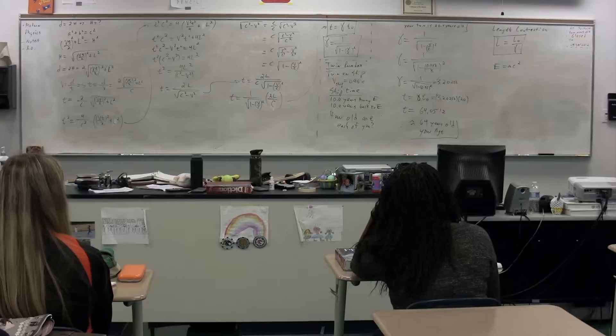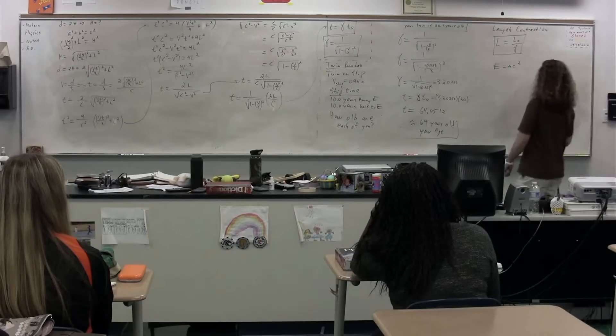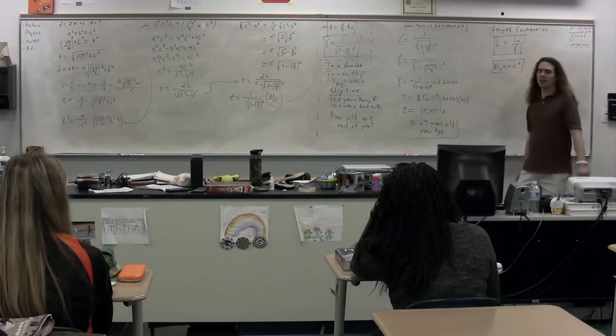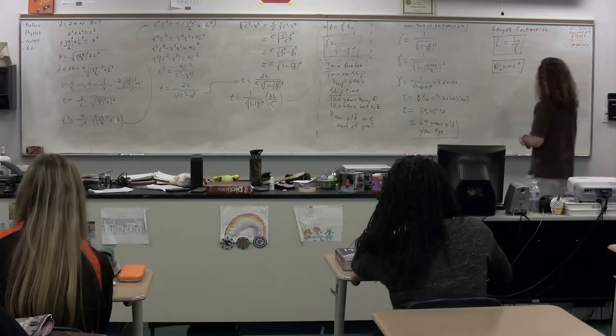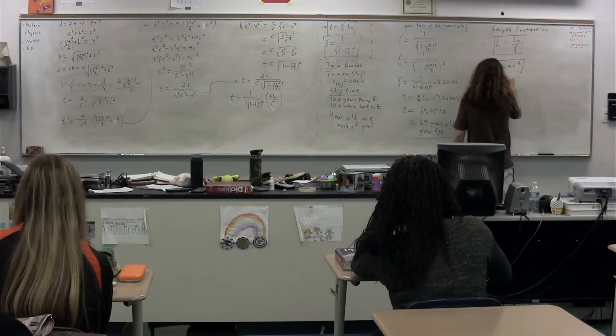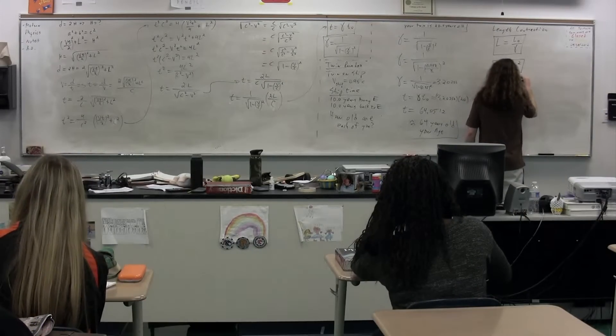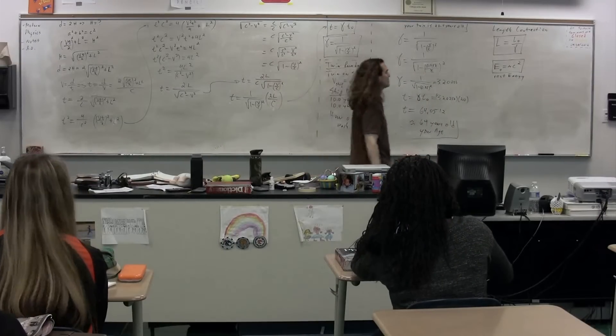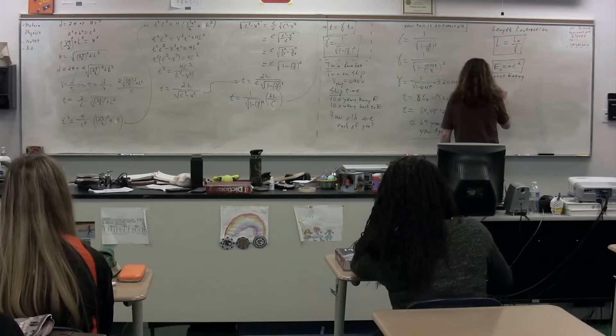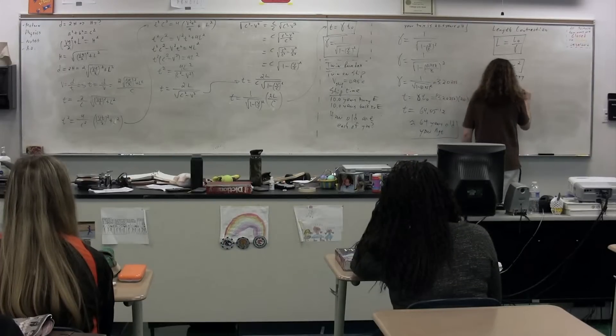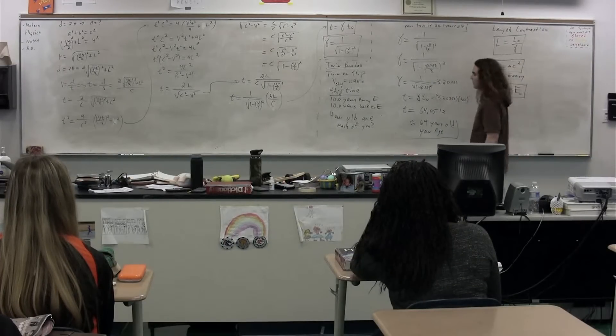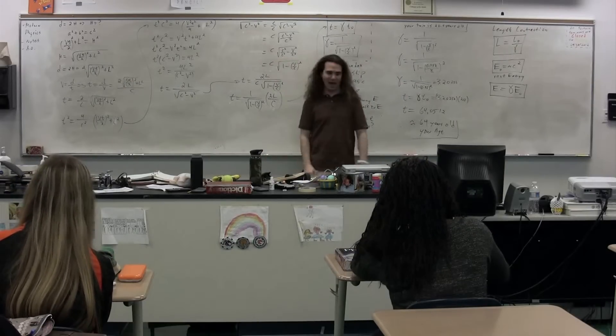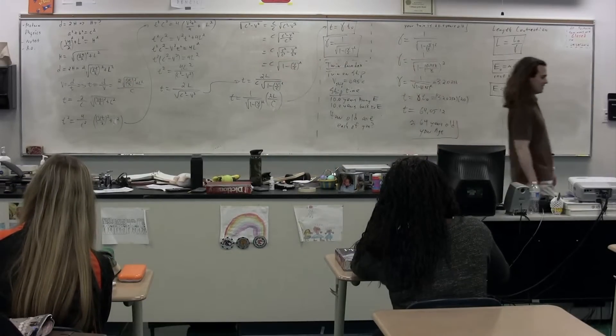Unfortunately, this equation, as written on the board, is not quite right. They're missing a knot. It is actually E knot, which is called the rest energy. Because the amount of energy or the amount of mass of an object is actually dependent on how fast it is moving. The energy is equal to gamma times E knot, which means the faster you move, the more energy you have, and the more massive you are.